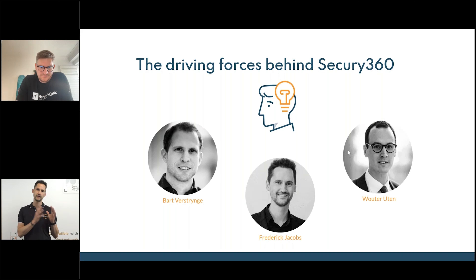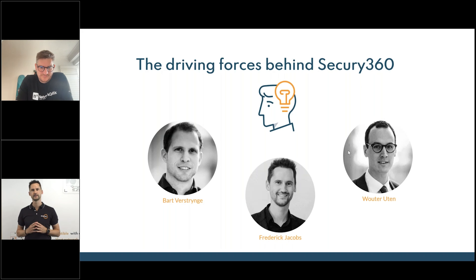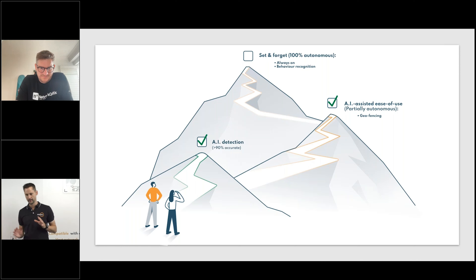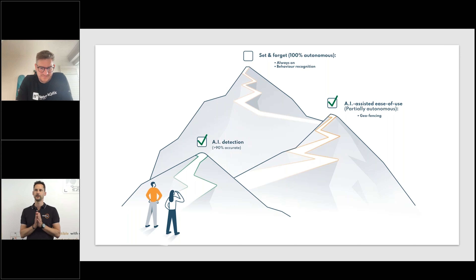Me and two co-partners started Securi360 a few years ago. Bart is the CTO — he built the architecture and is very active in AI. I've been in security for 15 years. We have two challenges in perimeter detection: false detections, and the usage of the system.